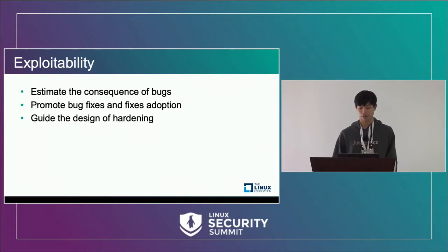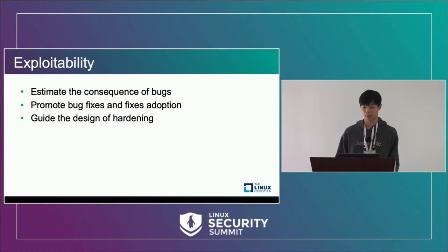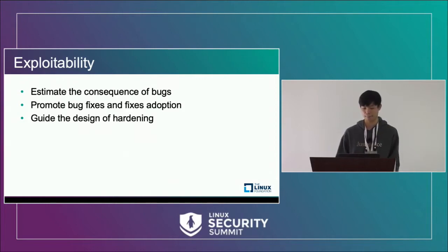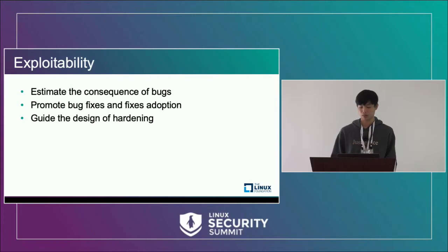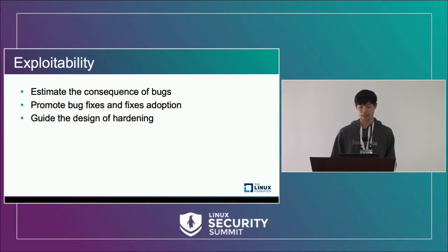Knowing the exploitability could also promote fix adoption for vendors. Vendors have the responsibility of protecting end users. When there is a critical fix for exploitable bugs, they should adopt the fix immediately. Assessing exploitability could also guide the direction and design of hardening. When we find a new exploitation method that can always be used to exploit a certain type of bug, we say the exploitability of this type of bug is increased. From that, we know something is missing in the kernel to mitigate the attack and we know where hardening should be working on.